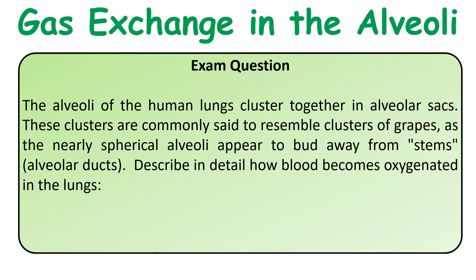The long answer question on the sheet you should have downloaded states: 'The alveoli of human lungs are clustered together in alveolar sacs. These clusters are commonly said to resemble clusters of grapes, and the nearly spherical alveoli appear to bud away from stems. Describe in detail how the blood becomes oxygenated in the lungs.' The key words are: the alveoli, the lungs, and how the blood is becoming oxygenated. Go back in the video and look at how the different adaptations enable oxygen to move from the air being breathed in into the bloodstream.